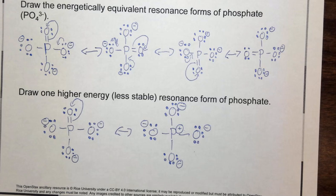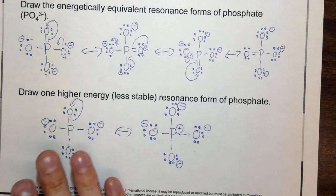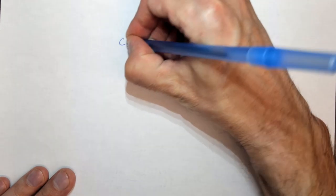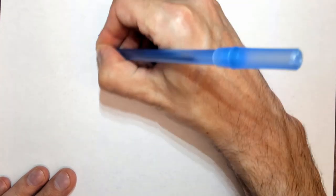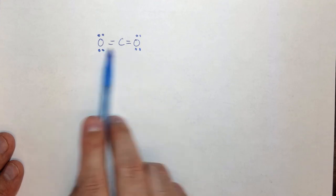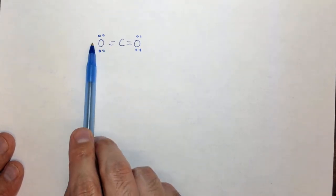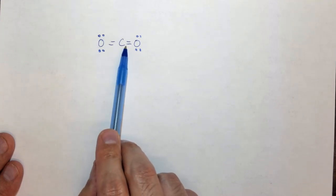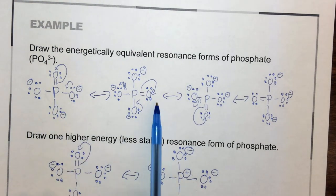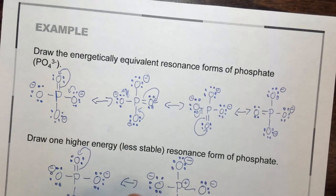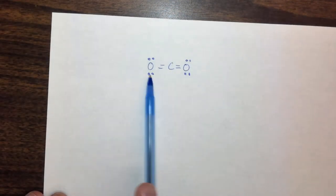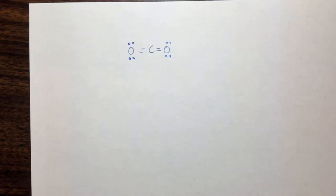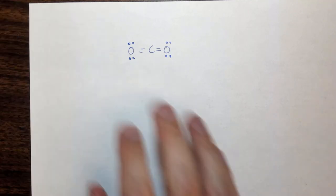One thing people confuse is thinking that any molecule with a double bond has an energetically equivalent resonance form. If you look at carbon dioxide, there is no energetically equivalent resonance form, because it has two double bonds. If you move one double bond out, you put formal charges - negative and positive - on carbon and oxygen, and that is not energetically equivalent. If the double bond can be in multiple locations - top, right, bottom, left, like the four phosphate resonance forms - then they're energetically equivalent. Just because something has double bonds doesn't mean it has energetically equivalent resonance forms.